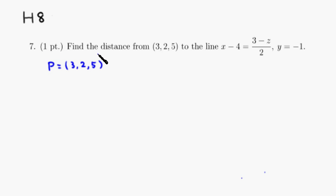Then for the line, I'm going to actually rewrite it this way. So x minus 4 is the same thing as (x - 4)/1 equals... I'm going to multiply top and bottom by negative 1 so that we can have (z - 3)/(−2). Then you have y equals negative 1.